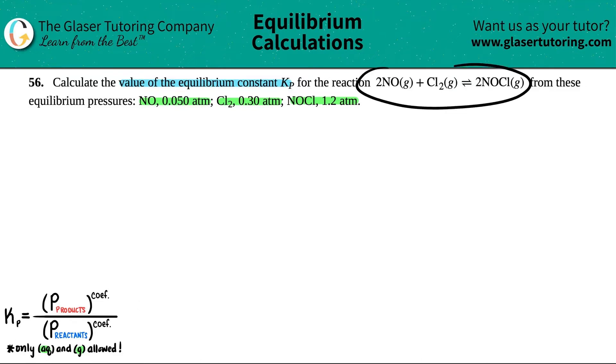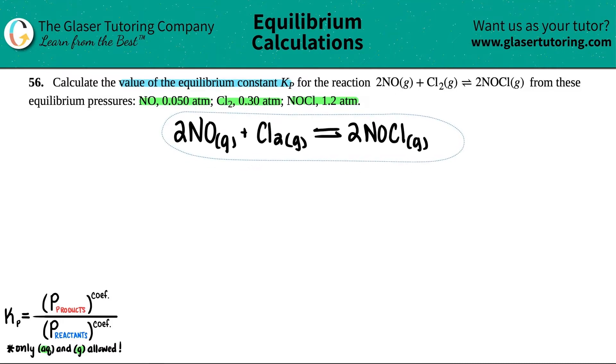So the first thing is I'm just going to write out this equation much bigger so that we can work with it. So I have 2NO gas plus Cl2 gas. This comes to equilibrium with 2NOCl gas. And now they did say that these were all equilibrium pressures. And remember, we're only allowed to use equilibrium values in my Kp formula. So we're ready to rock and roll. What I'm going to do is just write these out with what they told me. So we have NO as 0.050 atm.